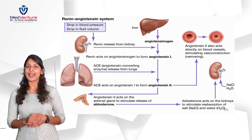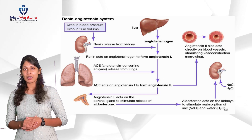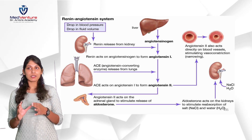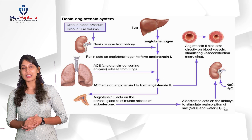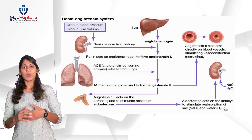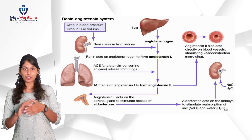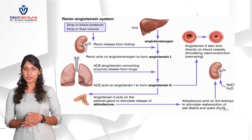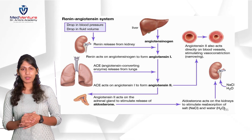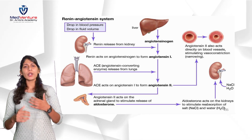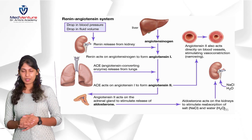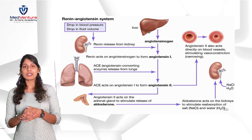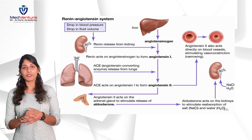We'll be looking into the pathophysiology of the renin-angiotensin-aldosterone system. As you can see in the image, we have renin, angiotensinogen, angiotensin 1, and angiotensin 2. When blood pressure in the body drops, we call it hypotension; when blood volume is reduced, we call it hypovolemia. When this happens, our body activates mechanisms like RAS to maintain blood pressure.